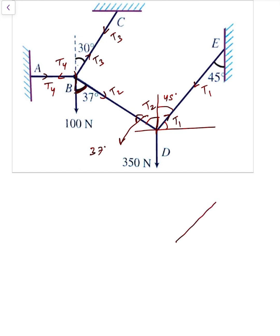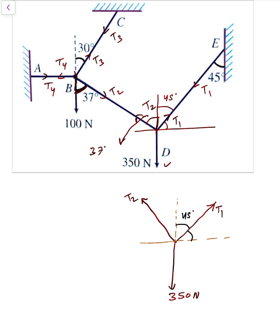At point D, draw the free body diagram: T1 acts at 45 degrees, T2 acts at 37 degrees, and the weight mg = 350 N acts downward. The components are: T1 sin 45°, T1 cos 45°, T2 sin 37°, and T2 cos 37°.